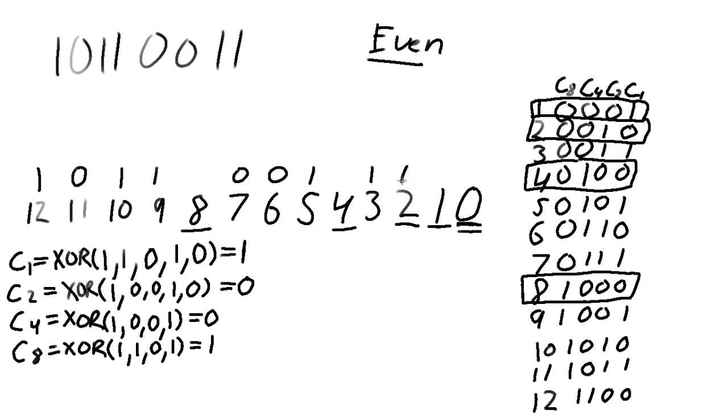And now we know what our check 1, check 2, check 4, and check 8 bits are. Let's go ahead and fill those in. So check 1 is a 1, check 2 is a 0, check 4 is a 0, and check 8 is a 1.